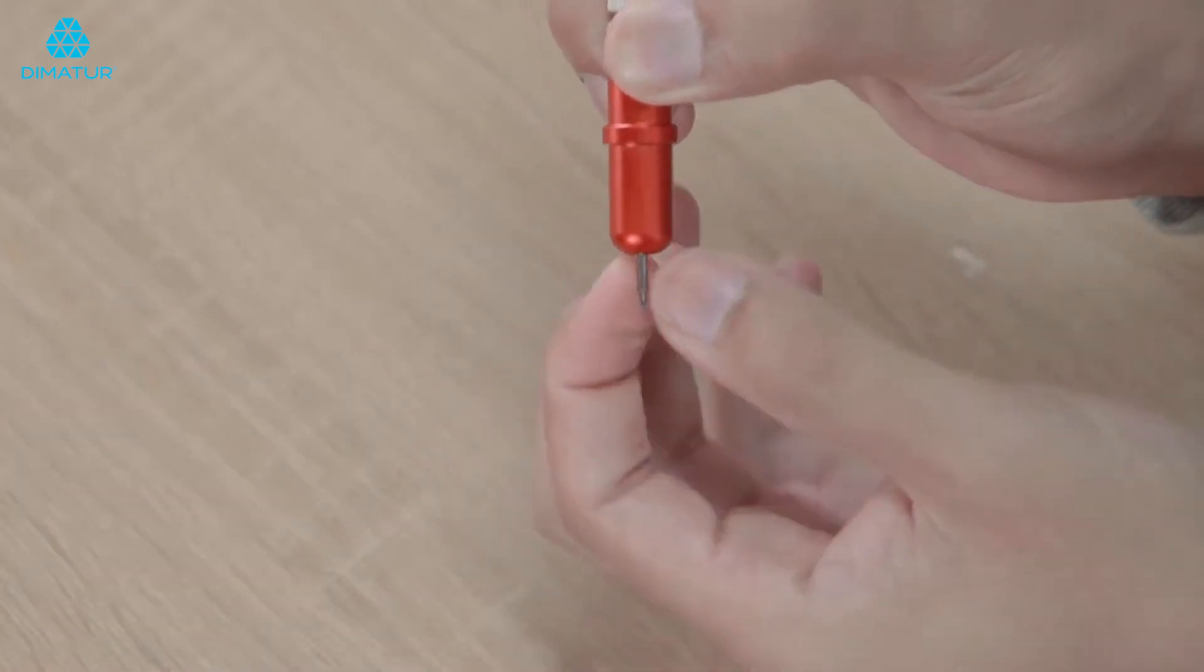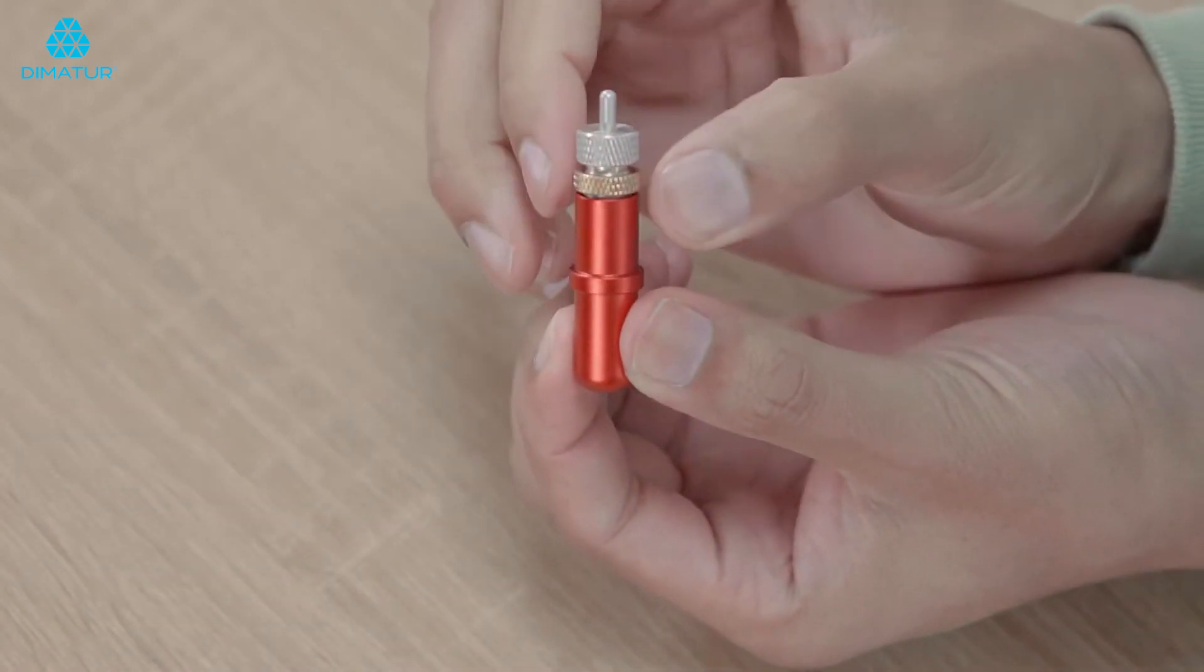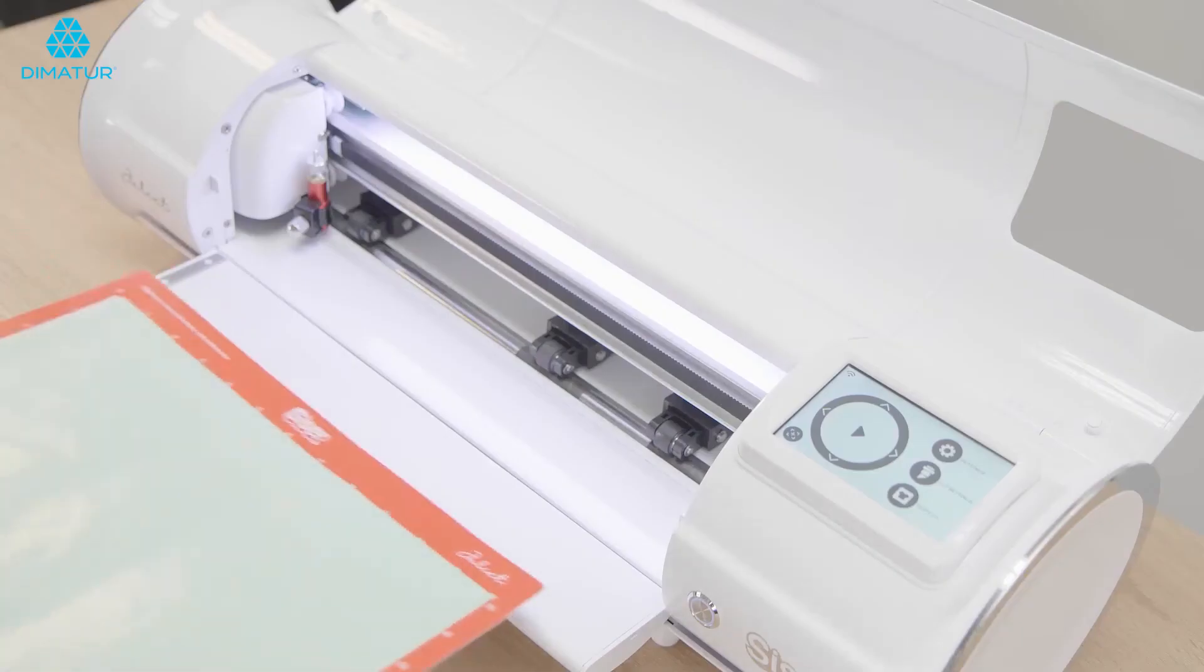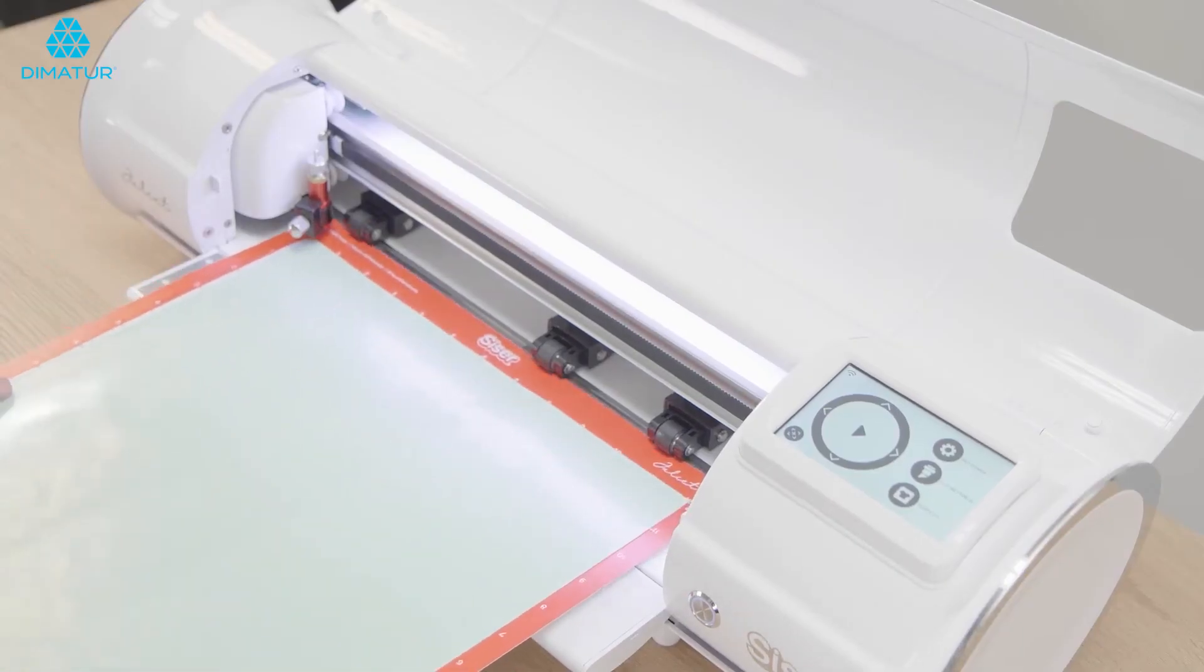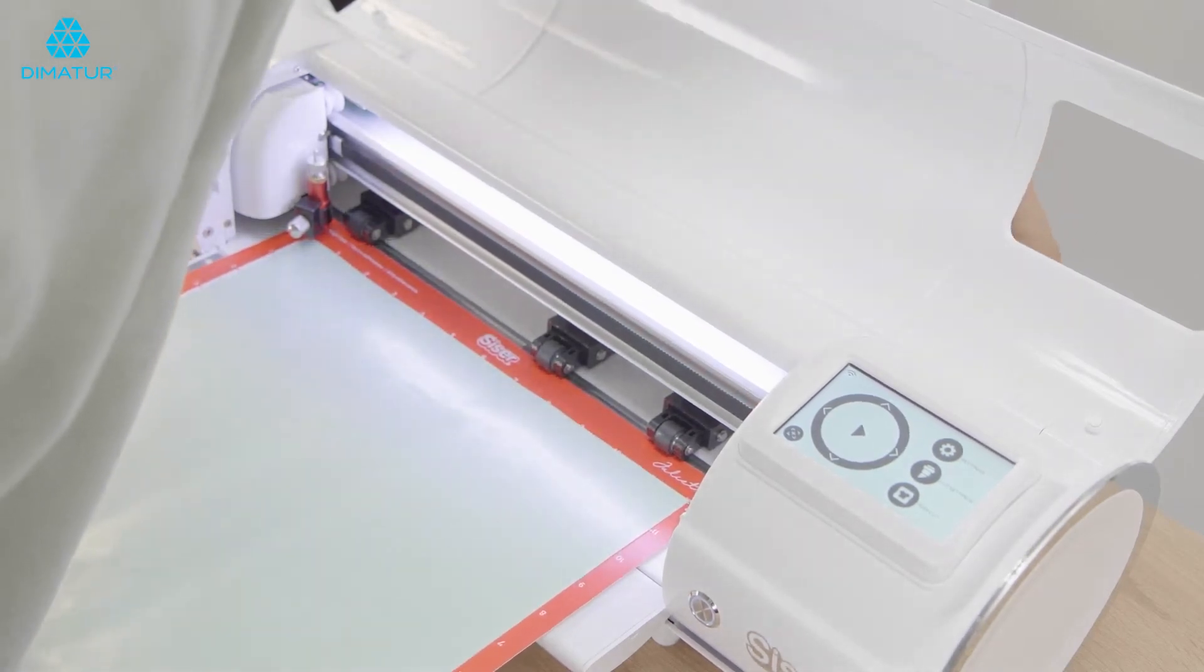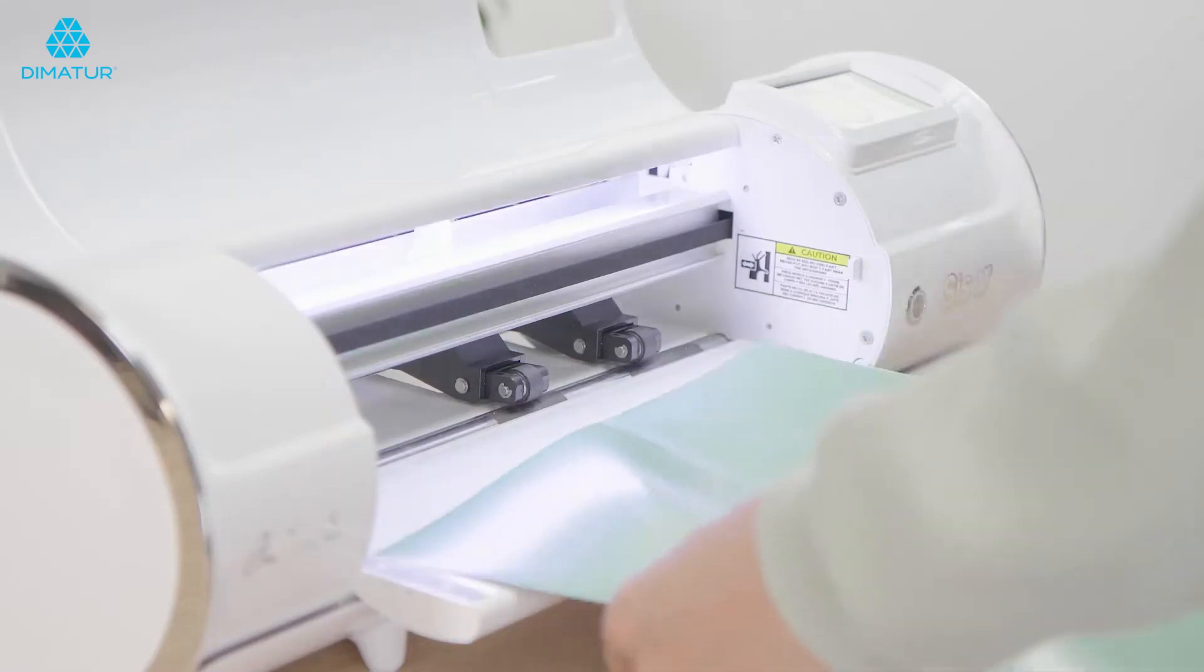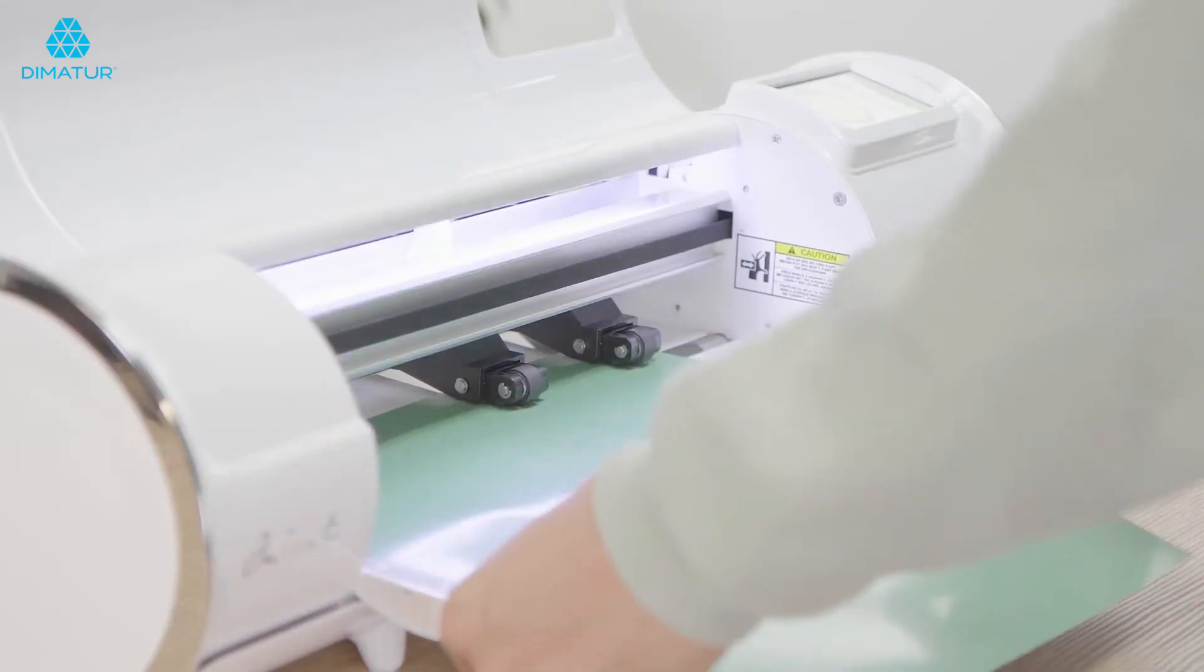When loading a mat, you now have a guide strip on the stabilizing door to make loading materials simple and accurate. Juliette also can be used without a cutting mat, which makes production faster and more efficient for the user.